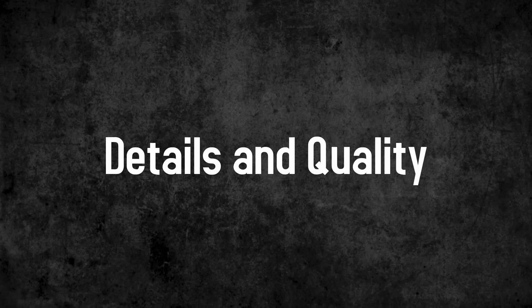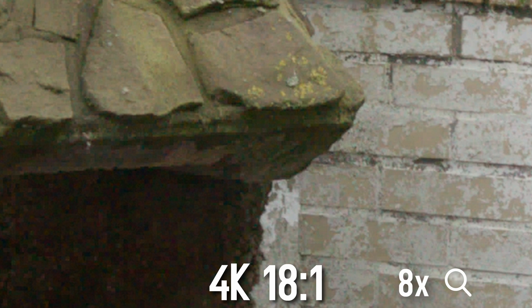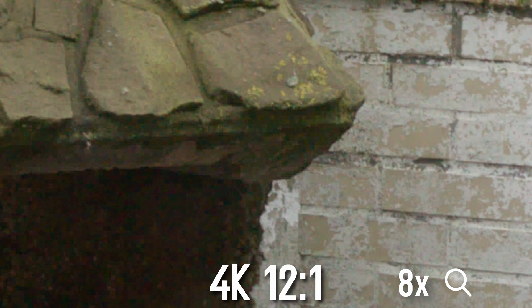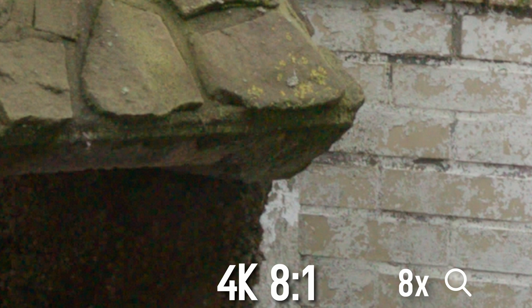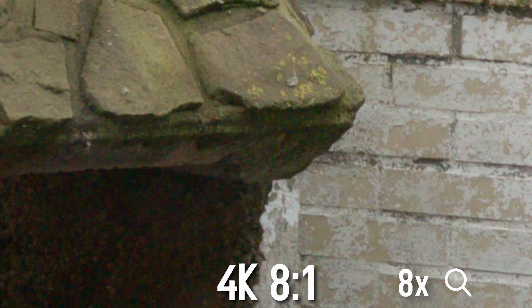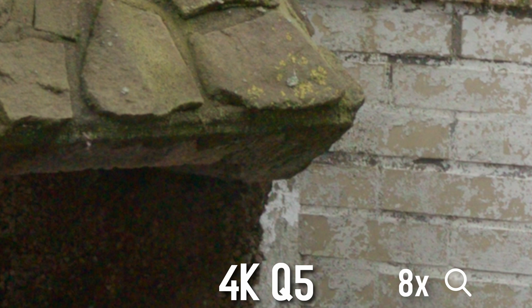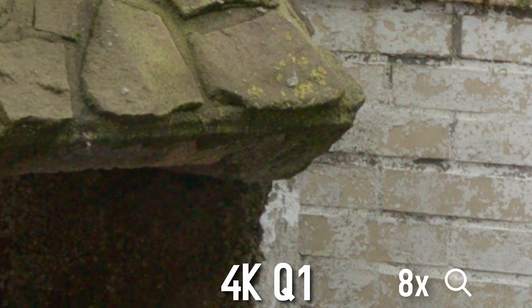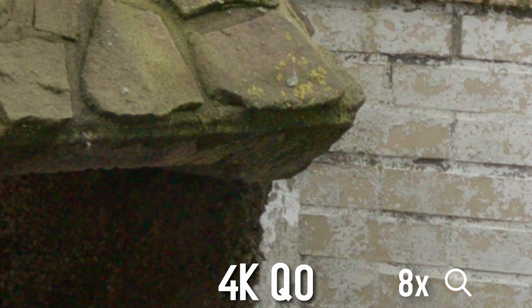Let's get to the quality and details. In 4K at 18-to-1, you can clearly see the mushy pixels in the dark areas, but also in the lighter areas. Even at 12-to-1 it is still visible, and a little bit still in 8-to-1. In 5-to-1, the digital nature is sort of gone in my opinion — 8-to-1 is on the edge, and if you zoom in very closely you can still see those pixel blocks. Interestingly, 4K Q5, the worst compression of constant quality, has literally no pixel blocks. And quite honestly, I'm not sure if Q3, Q1, and Q0 get noticeably better — maybe a little, but not that much.